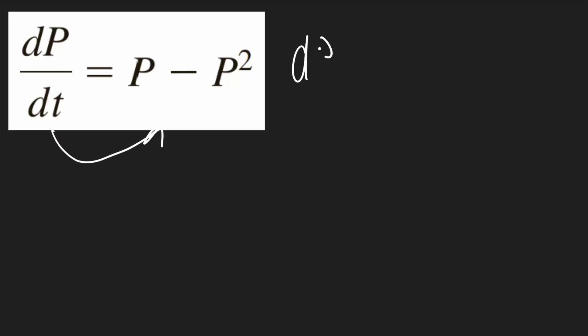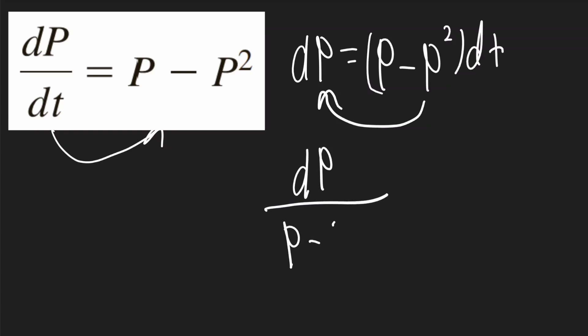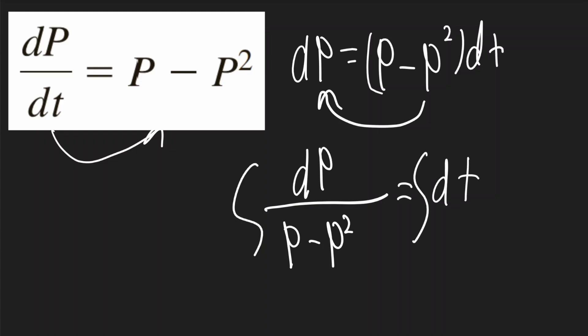In this problem, I'll start by multiplying dt to the other side to get dp = (p - p²) dt. Now I'll divide that term to the other side to get dp over (p - p²), and that'll be equal to dt. Now I'll take the integral of both sides.